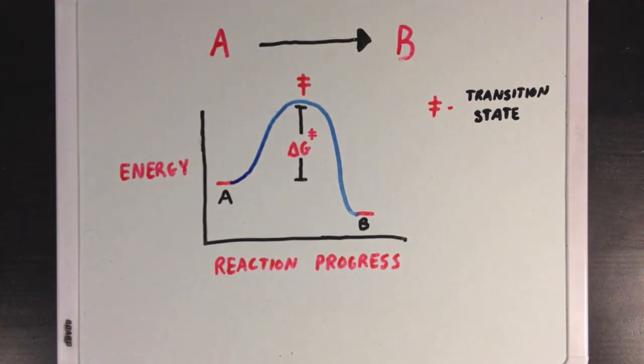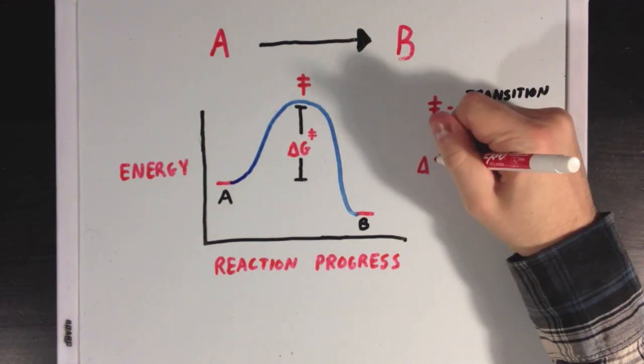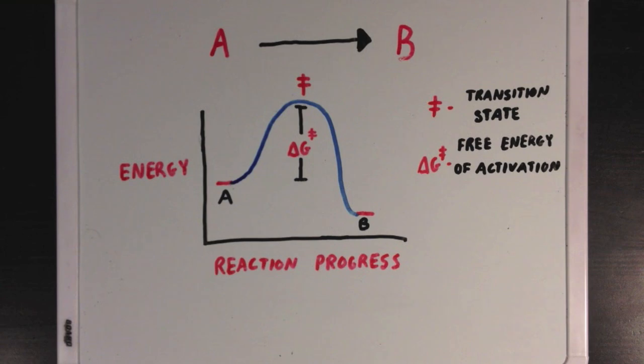Now, the difference between the energy level where we start and the top of our graph at our transition state is what we call the delta G double dagger, or the free energy of activation. And this is the amount of energy that A needs to have in order to break the reaction barrier to ultimately get to point B.